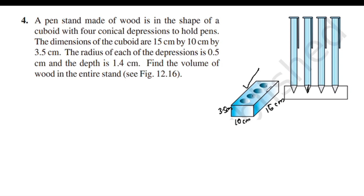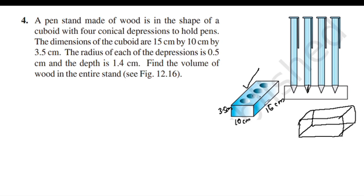To find the volume of wood in the cuboid, we will subtract the four conical depressions. The volume of wood equals the volume of the cuboid minus the volume of the conical depressions.